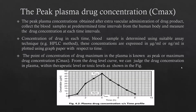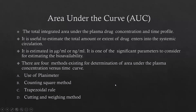At the point of Tmax on the graph, the plasma concentration of the drug is at its maximum. Next is the area under the curve, also known as AUC. The AUC is the total integrated area under the plasma concentration versus time profile.